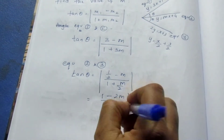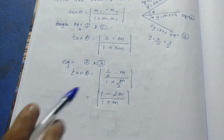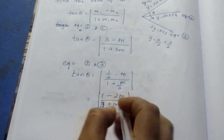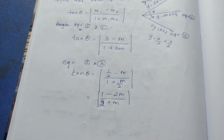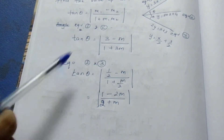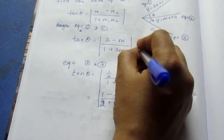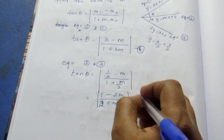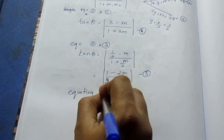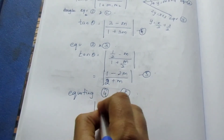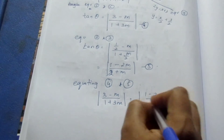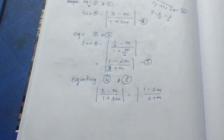The factor of 2 in numerator and denominator cancels out. These are the two tan θ expressions — equations 4 and 5. Since both equal tan θ, we equate them: |( 3 − m) / (1 + 3m)| = |(1 − 2m) / (2 + m)|.